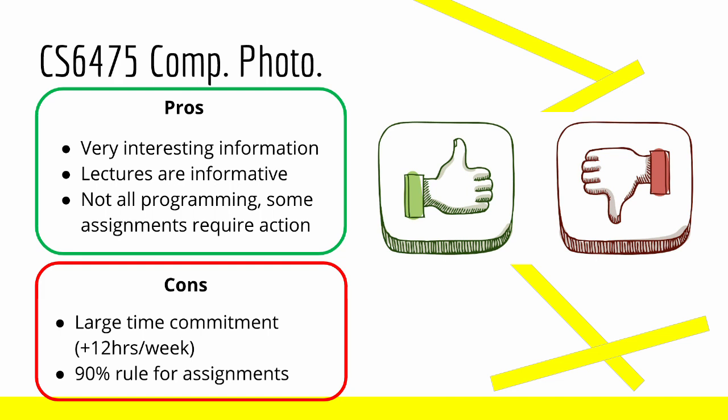For cons, it is a large time commitment, about 12 hours a week. And then my least favorite thing about the class: the class runs off a 90% rule for assignments, which means when grading an assignment, the best you can do — even if you get everything perfect — is a 90 out of 100. To get that extra 10 points, you have to do what they call an above and beyond, which is a little bit of extra work of your choosing, and that'll get you closer to 100. So far I haven't gotten a 100 on an assignment other than assignment one, which isn't graded by the 90% rule. It does make it a little bit more difficult to do really well in the class, but the above and beyond does let you explore things you might find interesting, so it's not all bad.